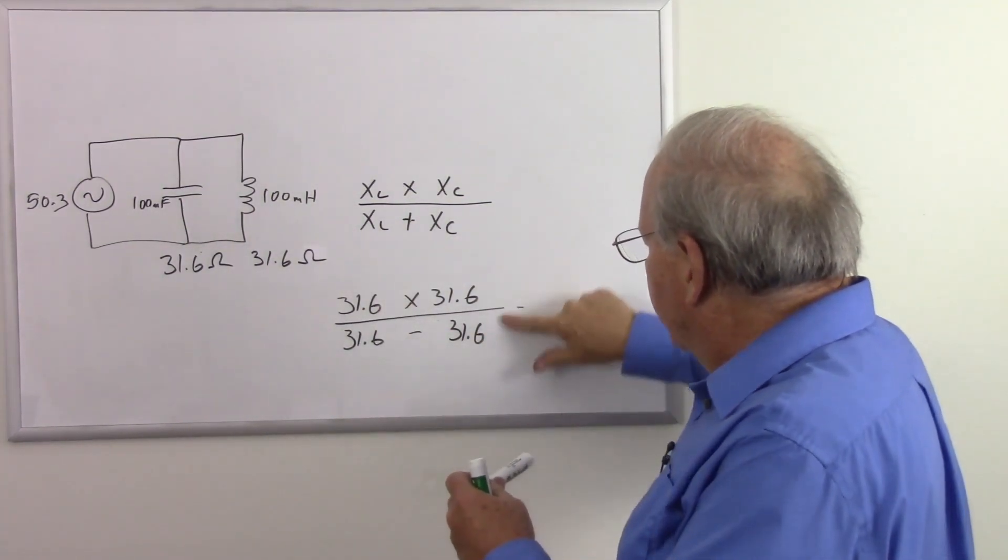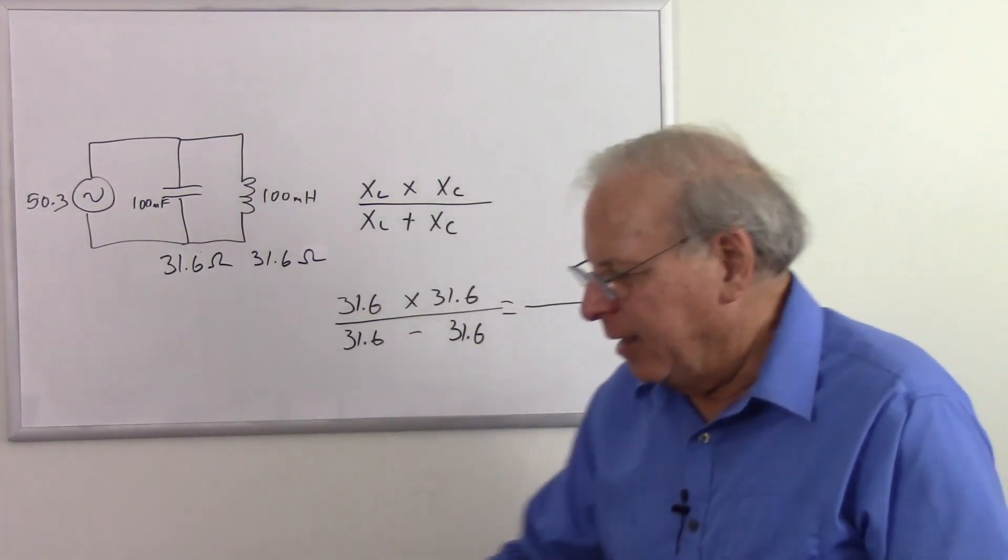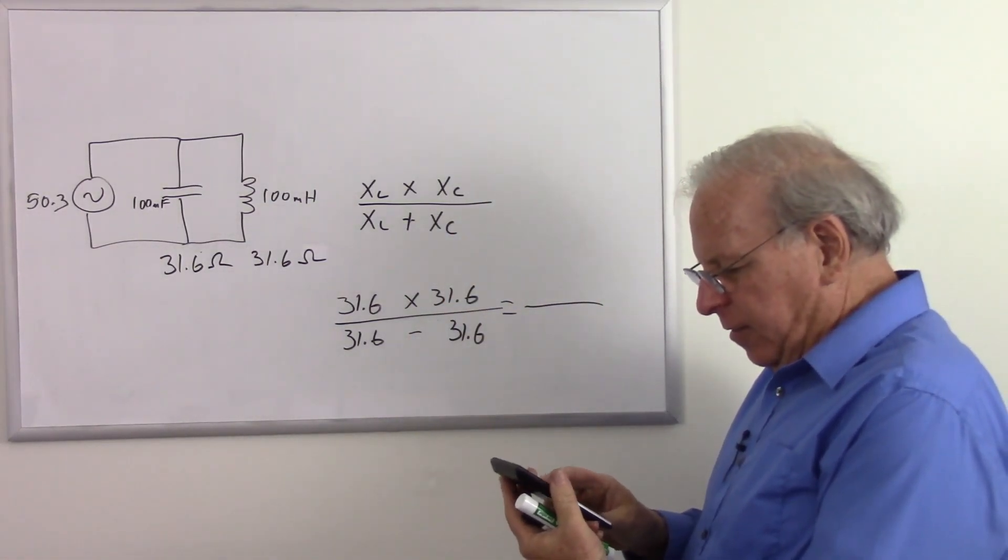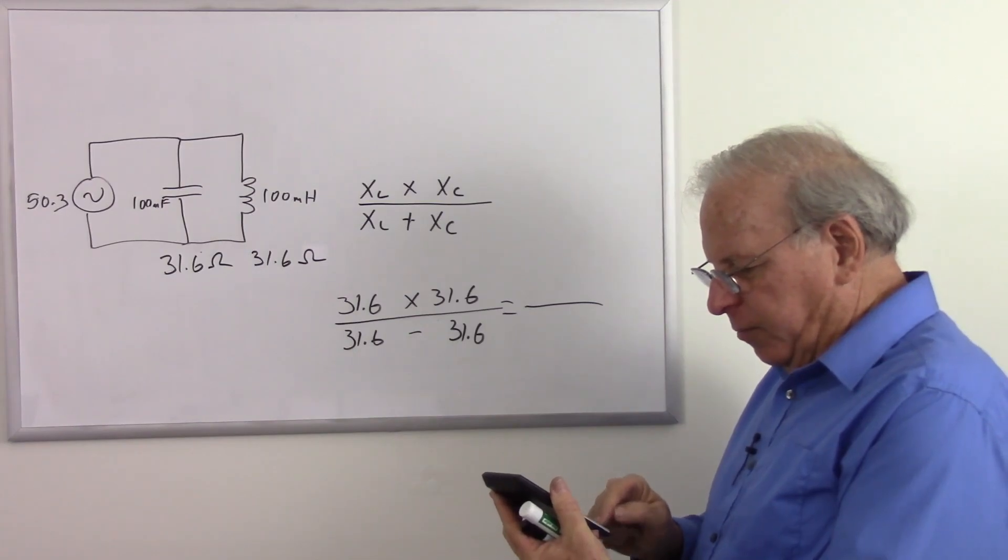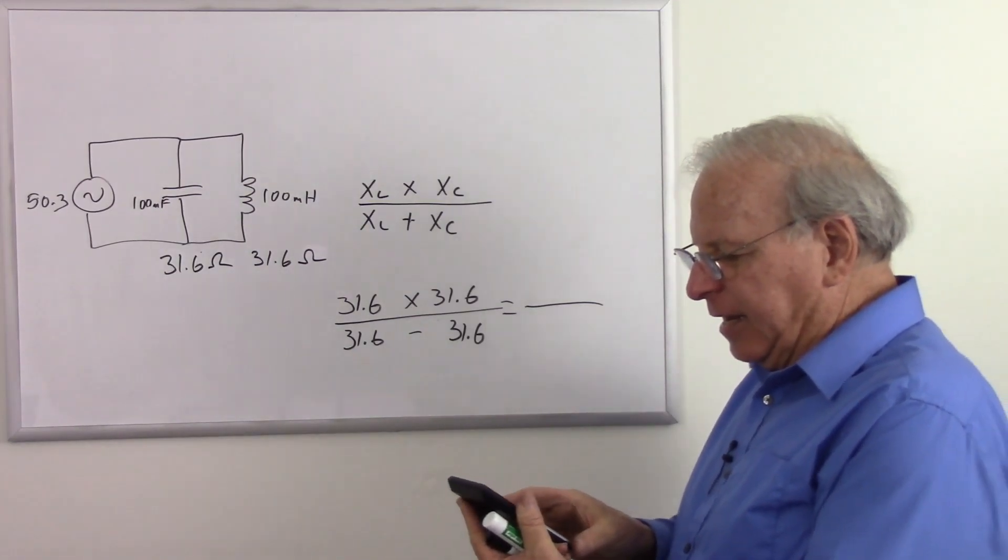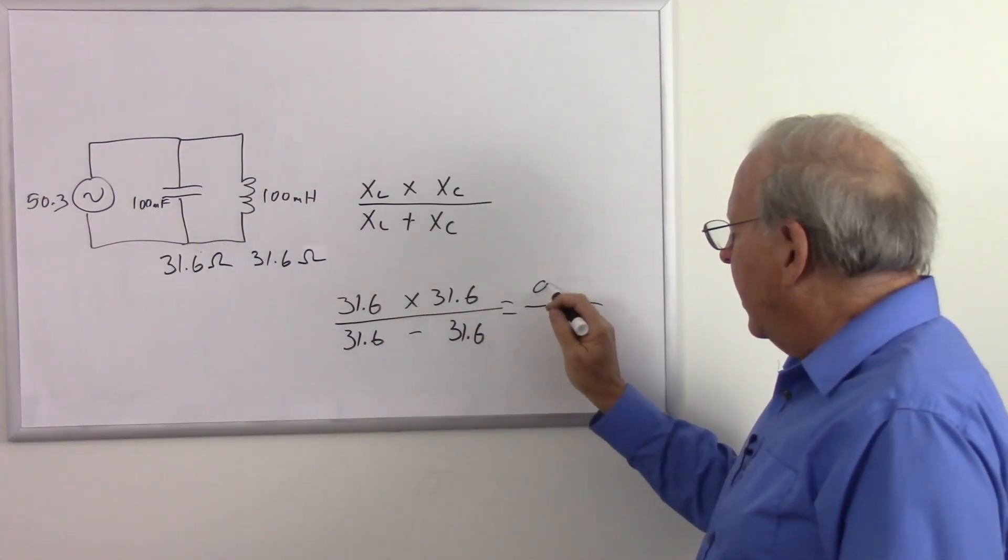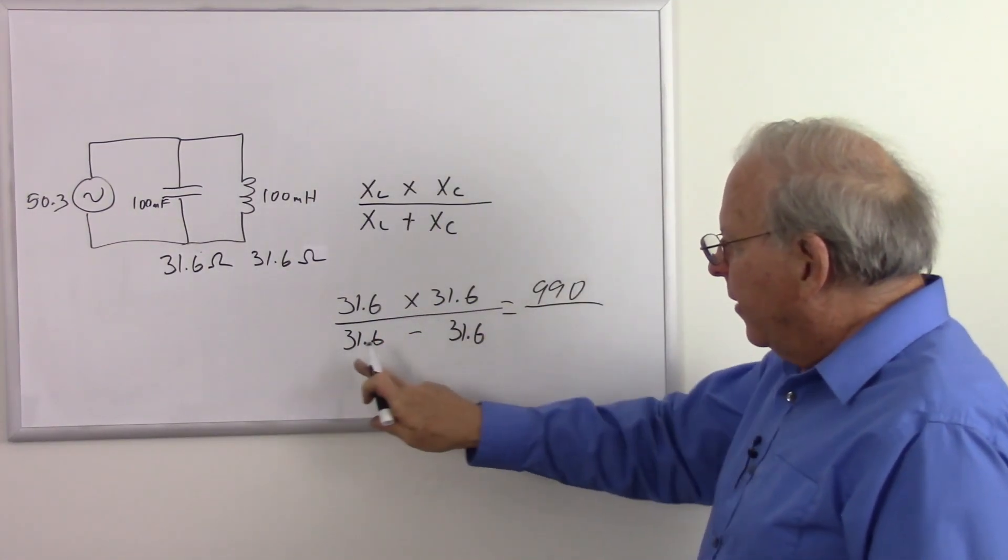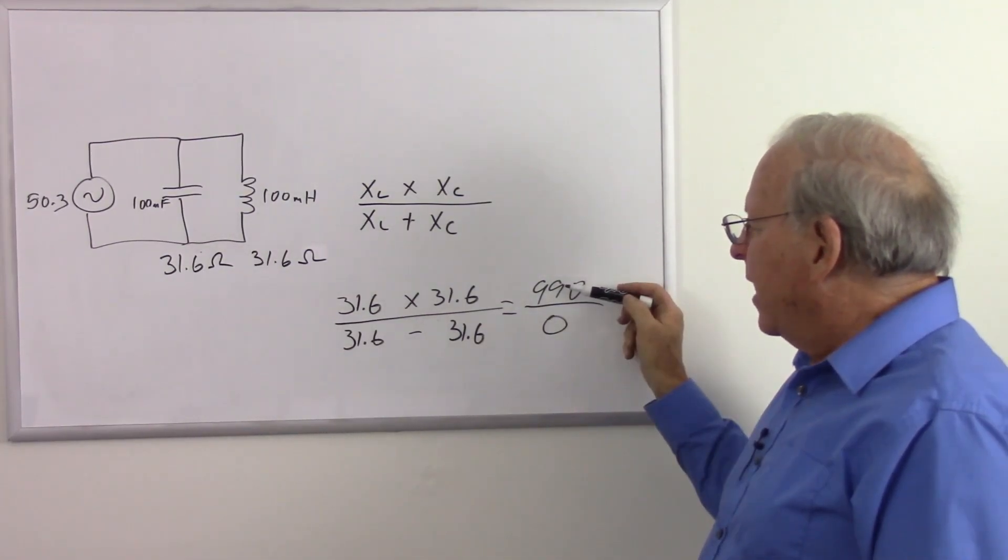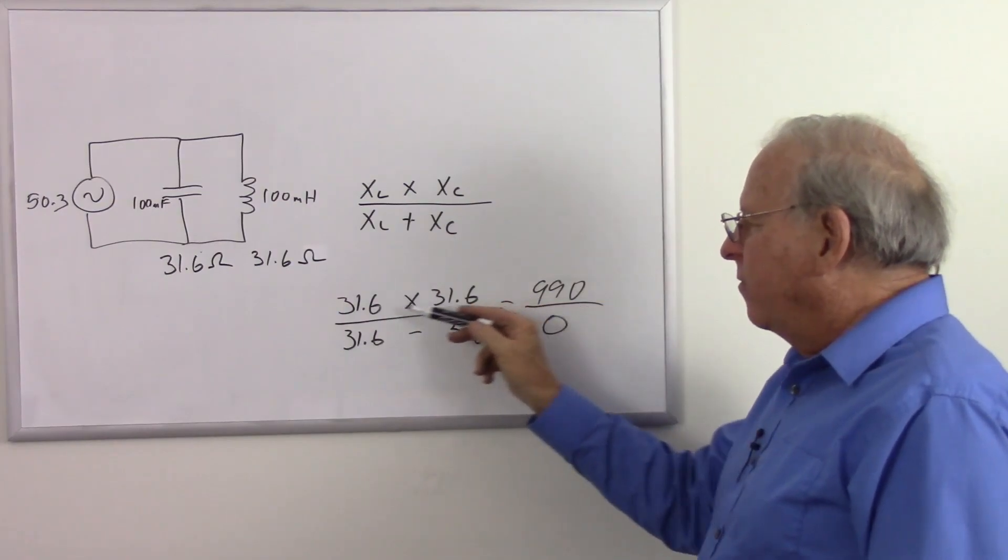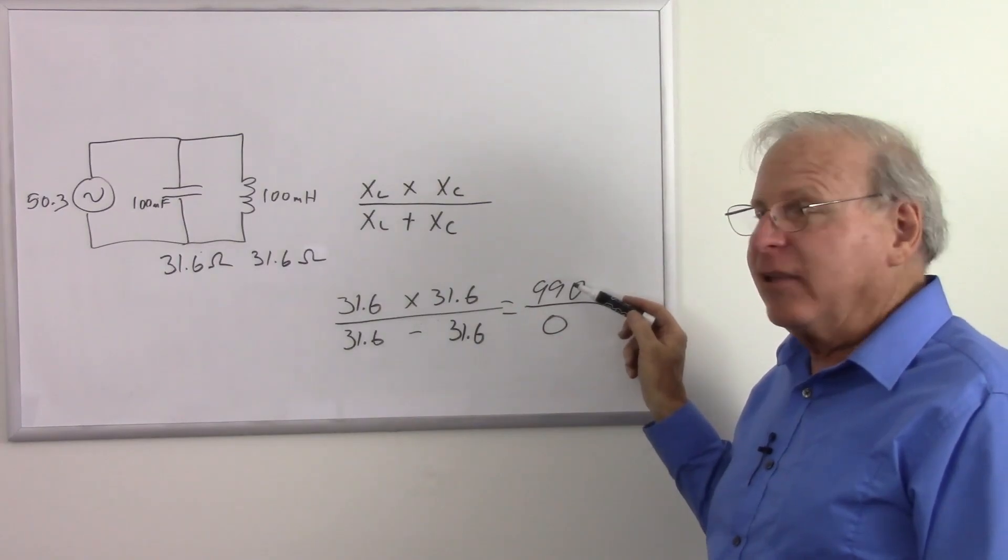So let's multiply these together. Bring out the trusty calculator. 31.6 times 31.6 equals and I got 998.6 or let's just make it 999. So that's 999 on top and 31.6 minus 31.6 on the bottom. So we're dividing the product of the two reactances, which is 999 by zero. You can't do that. You can't divide by zero.